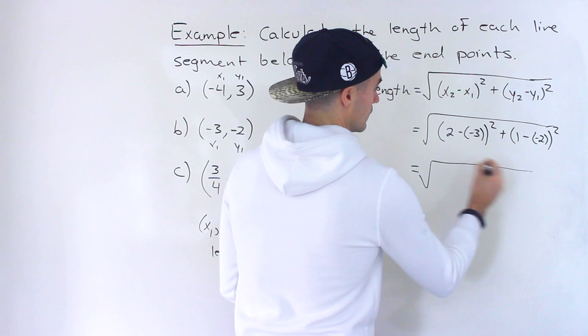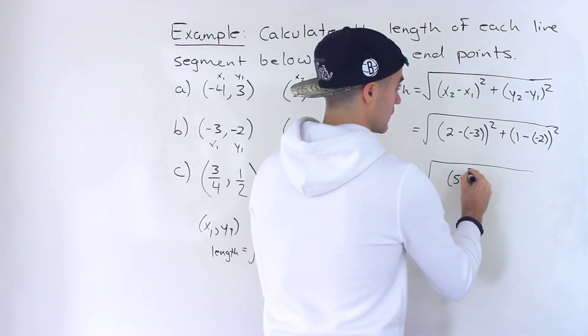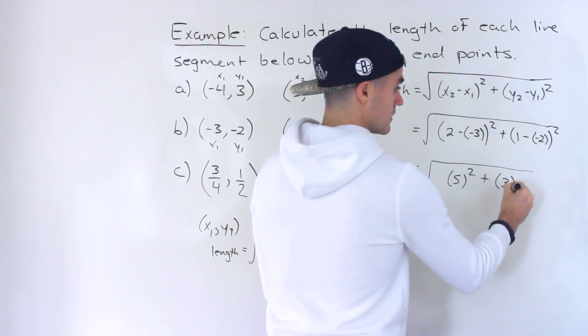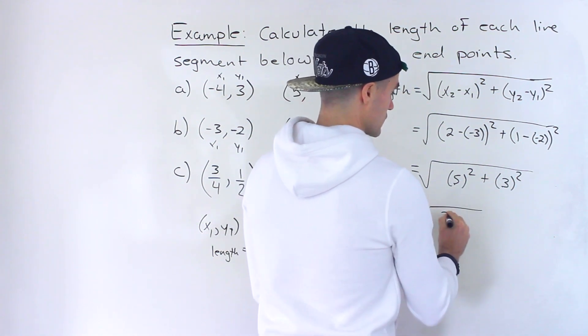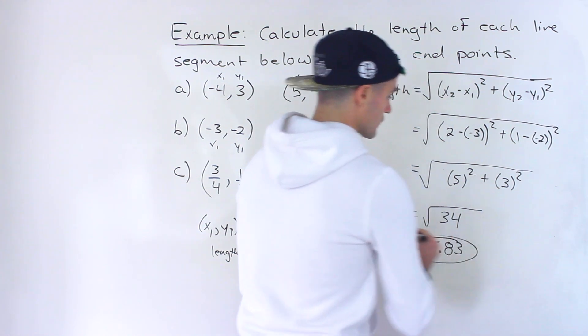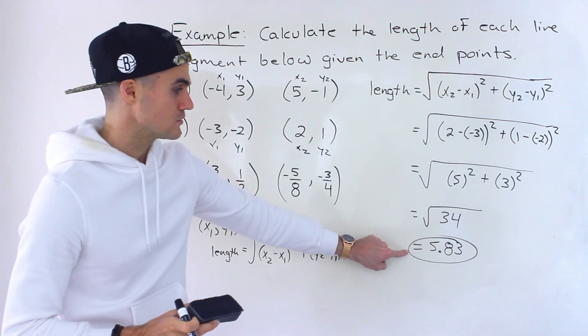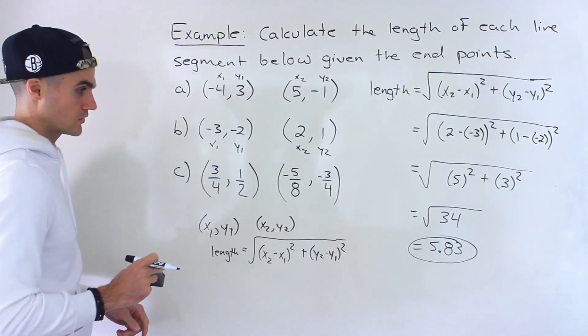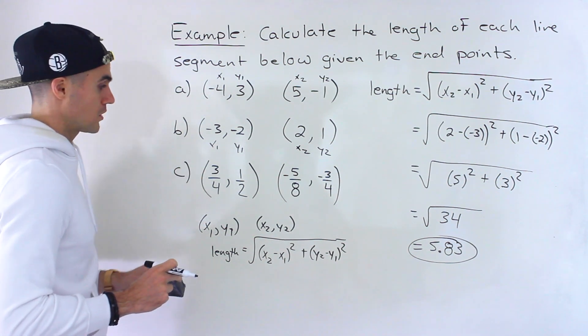We would have 2 minus negative 3 is like 2 plus 3, which gives us 5. 1 minus negative 2 is like 1 plus 2, which gives us 3. So this would be 25 plus 9, which would give us 34. Square root of 34 would be approximately 5.83. So sometimes you'll see solutions given in this format as an exact value. Sometimes it'll be in decimals. If you want to get the decimal, just plug it into the calculator. So that's the length of the line segment for part B.